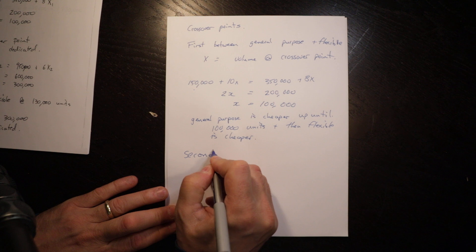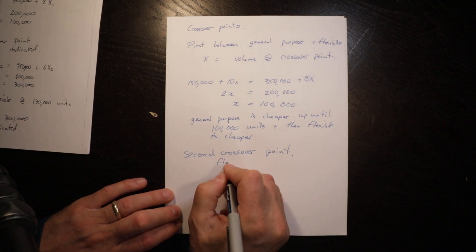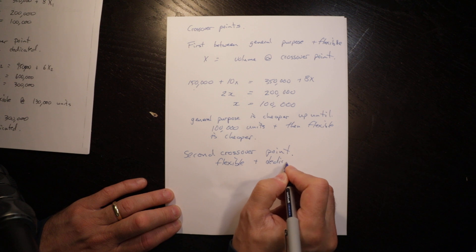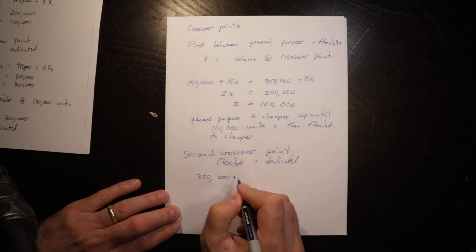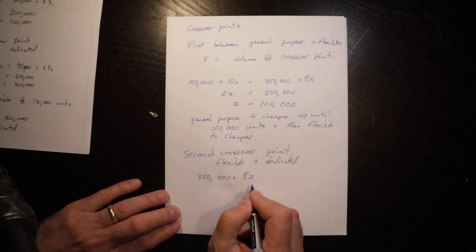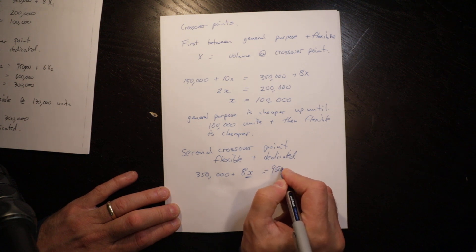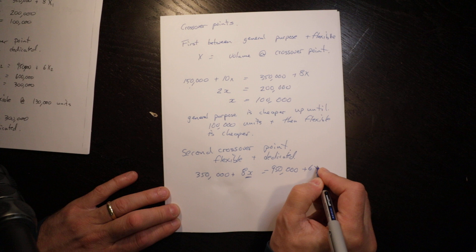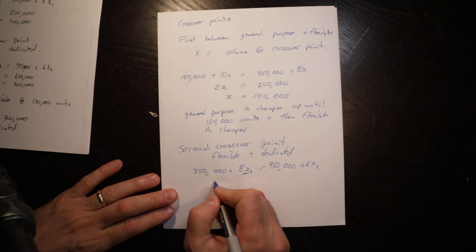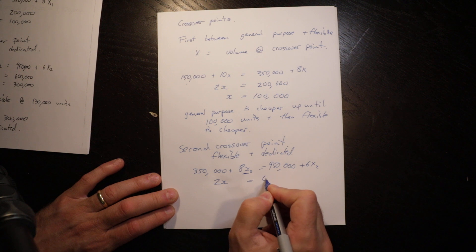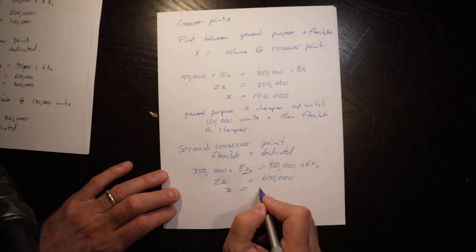The second crossover point is between flexible and dedicated. We do it the same way: 350,000 + 8x = 950,000 + 6x. Subtracting 6x from both sides and 350,000 from the right gives 2x = 600,000, so x = 300,000.